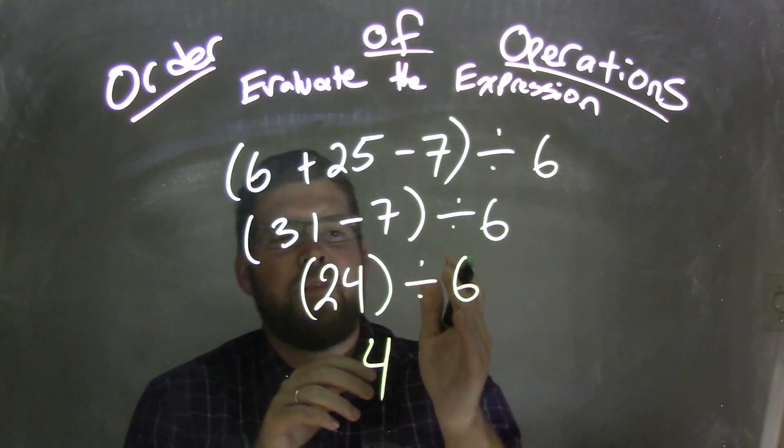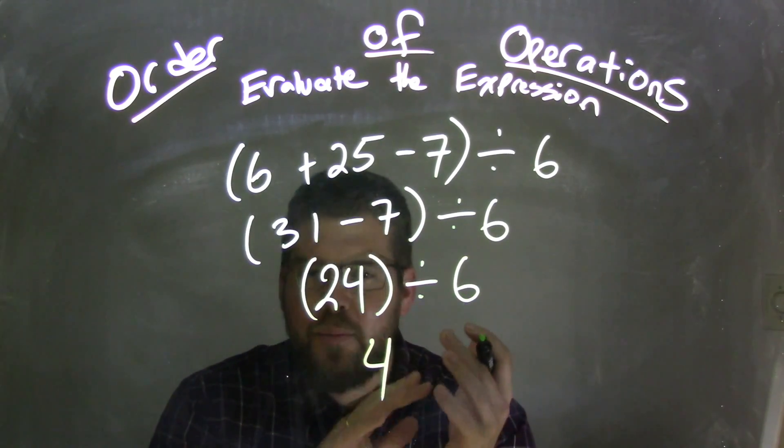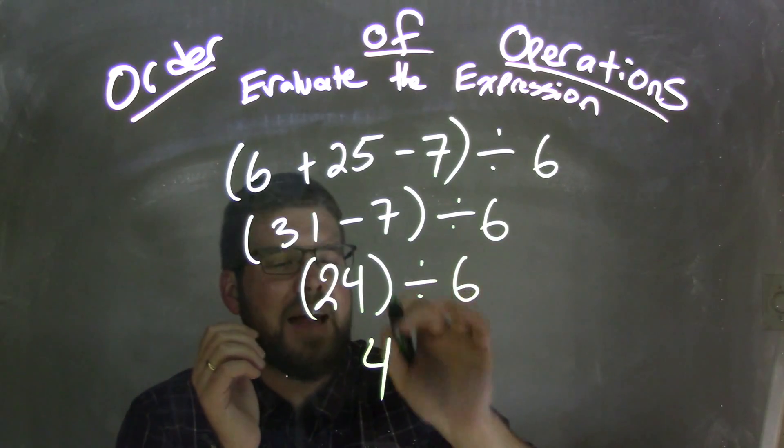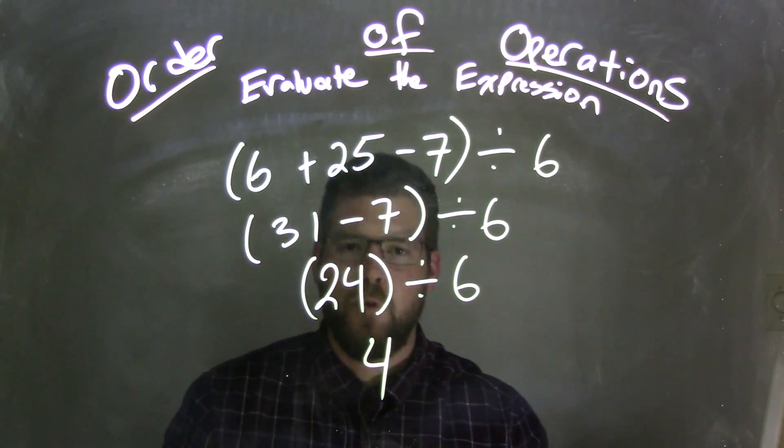and then we divided by 6 on the outside, which was 4, which was tricky because you think division comes early, but in fact, we had to deal with everything inside the parentheses first, and then lastly deal with that division by 6 to get the 4.